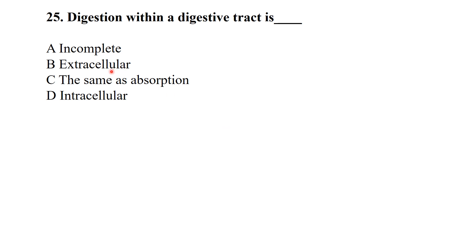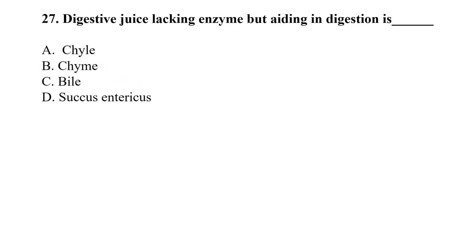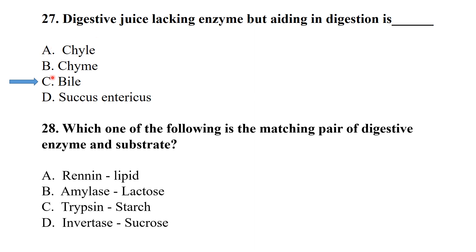MCQ 25: Digestion within the digestive tract is extracellular digestion. Maximum number of enzymes occur in omnivores because omnivores eat both vegetables and meat. Digestive juice lacking enzymes but aiding digestion is bile.